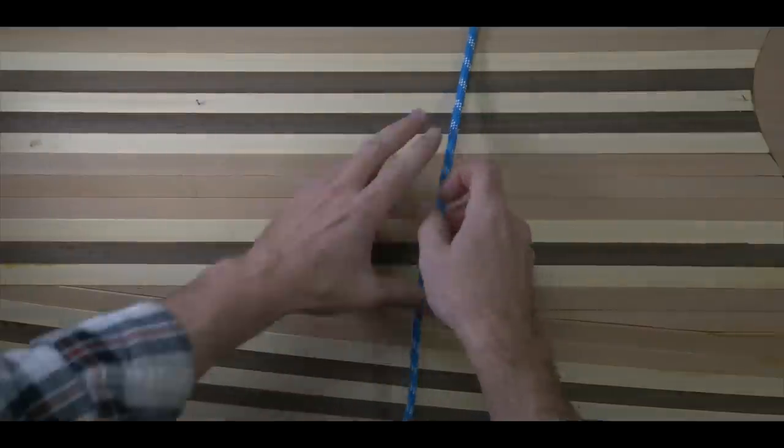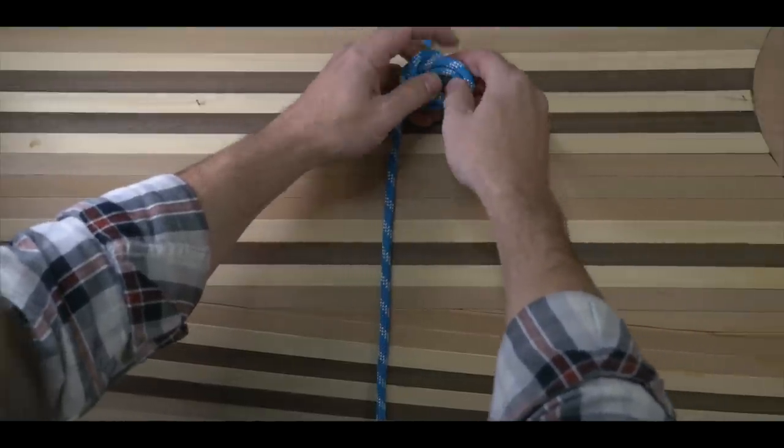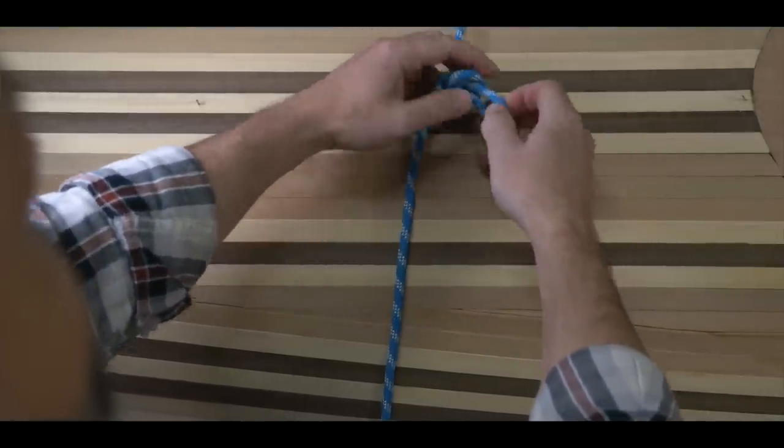To start off, anchor one end of your working line by tying one end of the rope to a fixed object such as a tree. A bowline knot is perfect for this.